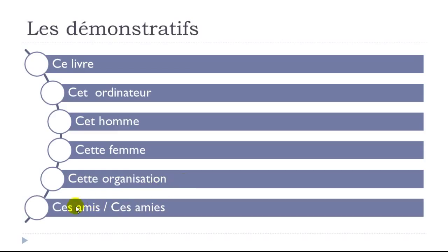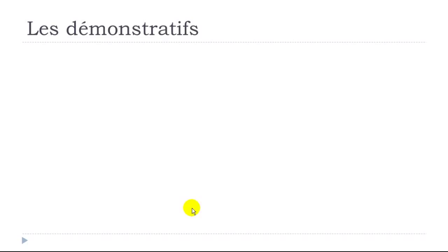For the plural, whether masculine — 'amis' — or feminine — 'amies' — the adjective démonstratif is the same: 'ces amis.' It's quite interesting because if you only listen, you don't have any phonetic information about whether it's masculine or feminine. That's just the way it is. Now let's continue with the démonstratif pronoms.